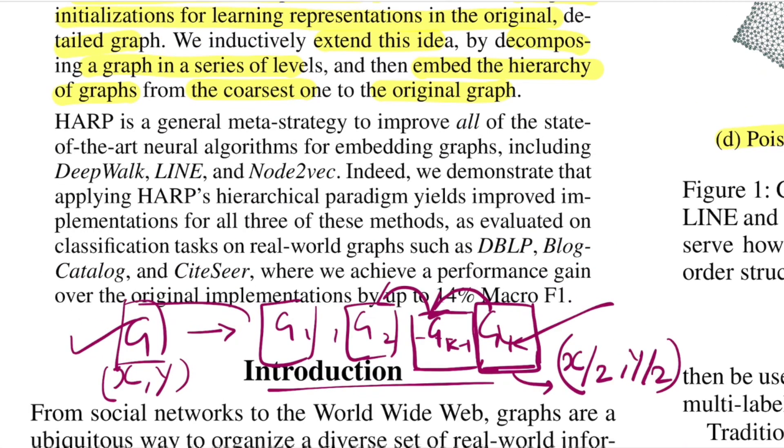They propose this as a general meta-strategy to improve all state-of-the-art neural algorithms such as DeepWalk, LINE, and Node2vec, by approximately 14% macro F1 when evaluated on classification tasks on these datasets. They're not proposing an algorithm that does embeddings for you. Instead, this is a method by which you can learn better representations for nodes by following this divide-and-conquer strategy, which can be applied with all previous approaches such as LINE, DeepWalk, and Node2vec. This paper came out in 2018, so all of these are previous techniques that came before this.